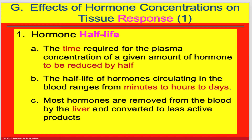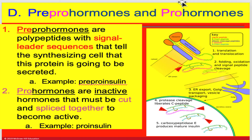Hormones have something known as a half-life — the time required for the plasma concentration of any given hormone to be reduced by half. This can range from a few minutes to days or sometimes even weeks. The liver is primarily responsible for removing most hormones from the blood and converting them to biologically inactive products. The kidneys and some other organs such as the lungs can also remove some hormones.